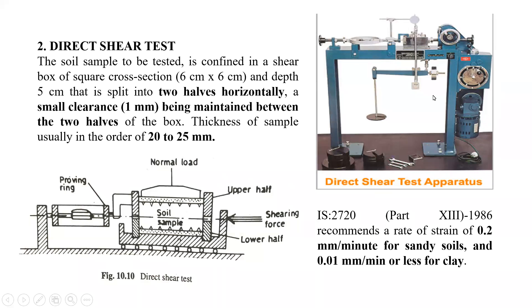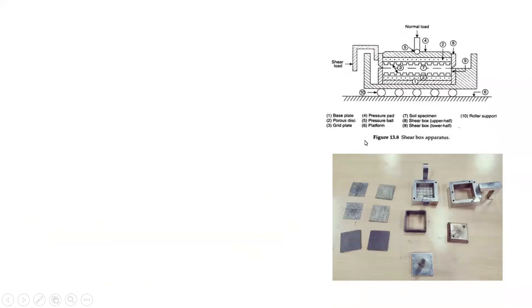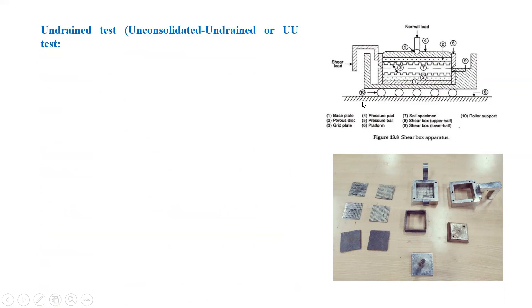Mechanically operated options are also available. You can see here the proving ring, the sample positioned between the upper half and the lower half with the normal load applied. The dimension of the shear box is 6 cm by 6 cm and depth is 5 cm, as mentioned earlier.